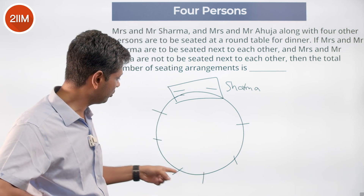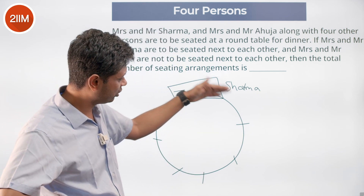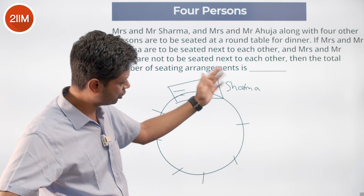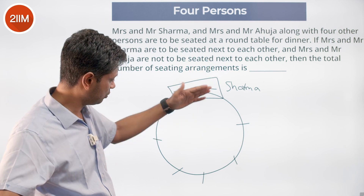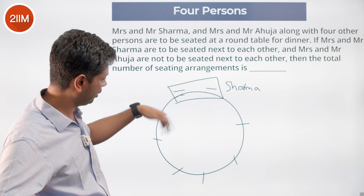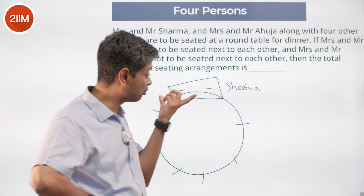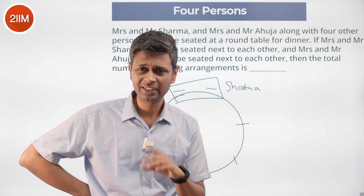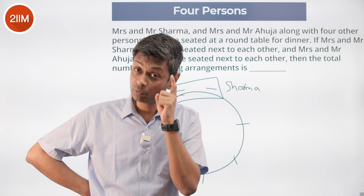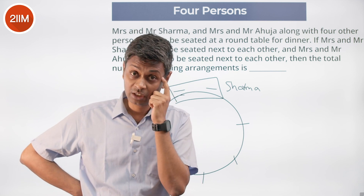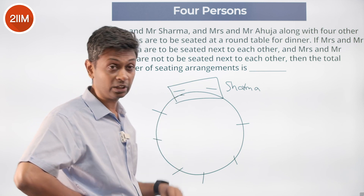I label the six remaining positions: one, two, three, four, five, six — each one position further to the left of the Sharma block. Those six people can be seated in six factorial ways. And we must keep in mind that Mrs. and Mr. Sharma could be arranged as husband-wife or wife-husband within their block.